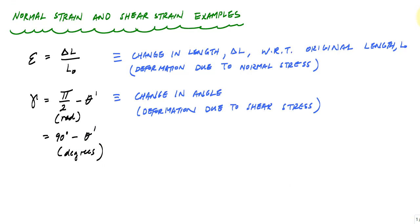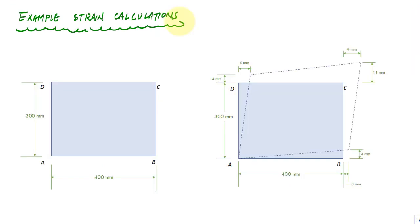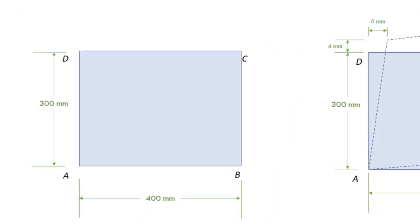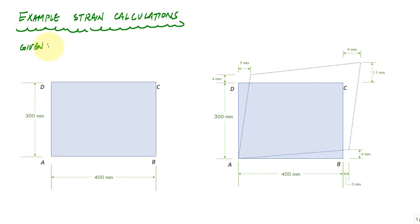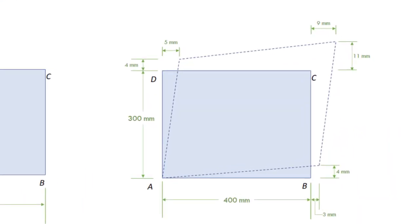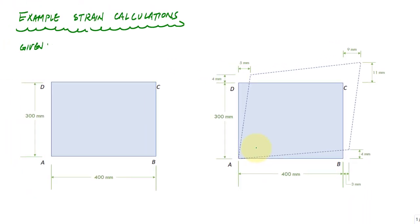Let's look at an example. I'm given the initial geometry of an unloaded rectangle ABCD — this could be like a rectangle drawn on a body before it's loaded. After applying loading to the structure, it deforms into the dotted line shape shown. This is the deformed shape after all loading is applied.